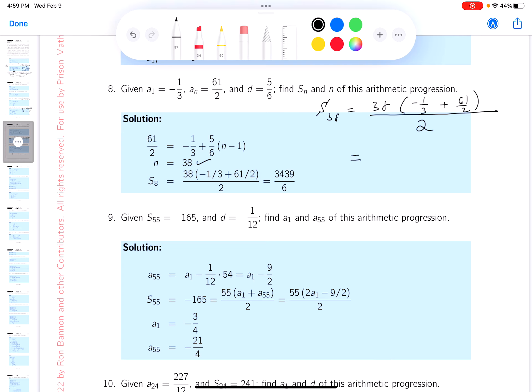2 goes into 38 19 times. Then I got a common denominator of 6, and that would be minus 2, right? Because 2 times 3 is 6, 2 times minus 1 is minus 2.